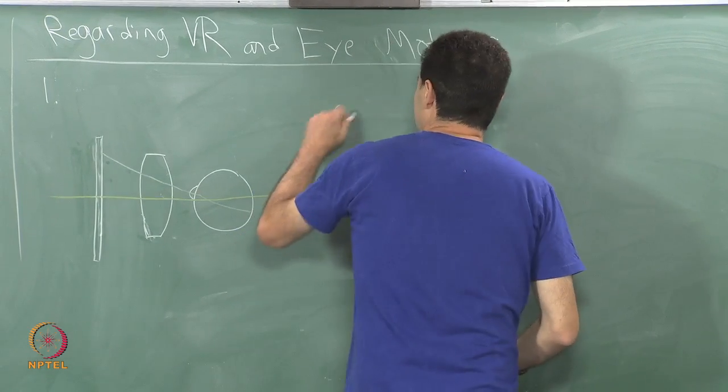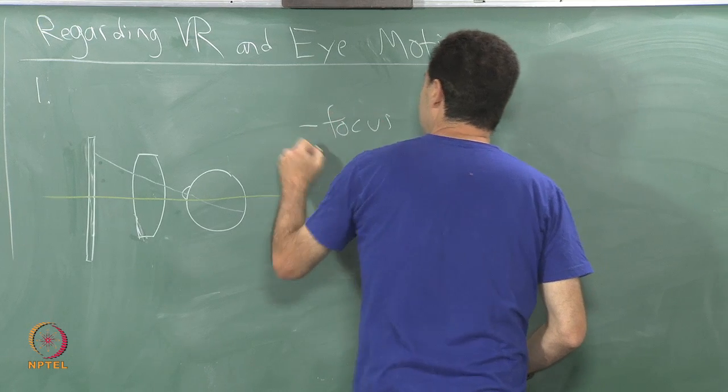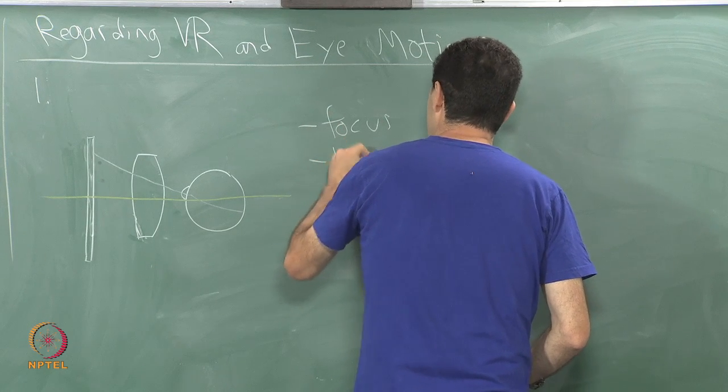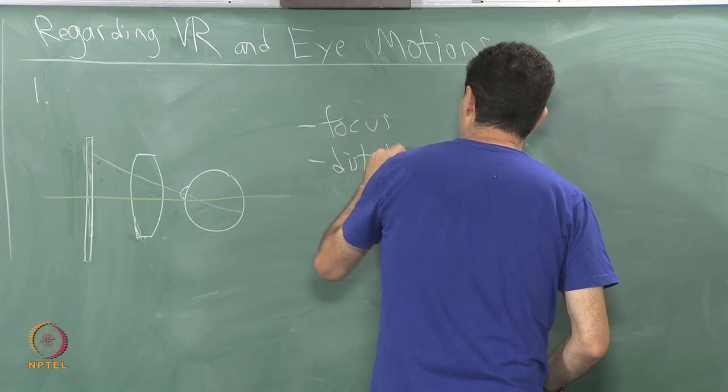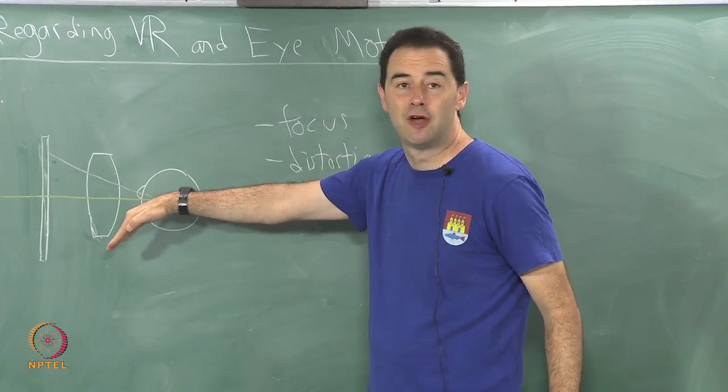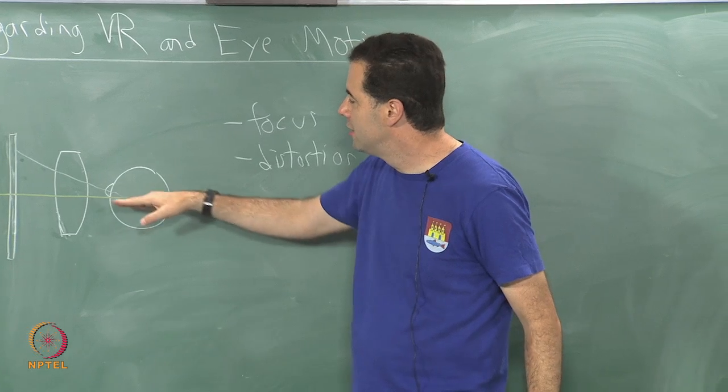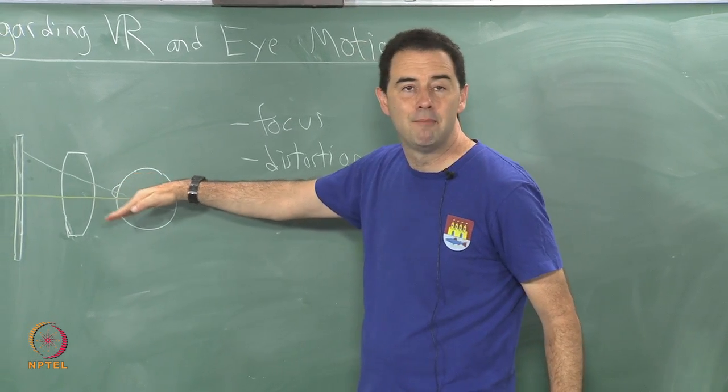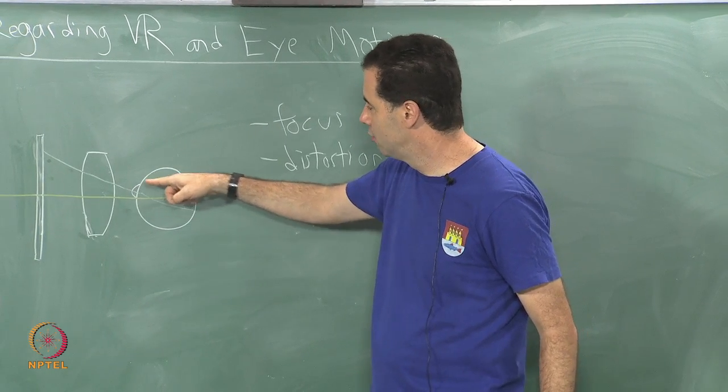There are problems of focal plane or just optical distortion. If there is distortion, I could try to compensate for the optical distortion in software, but the distortion I get could be a function of where I am pointing my eye directly.